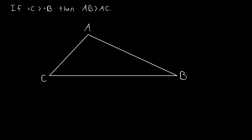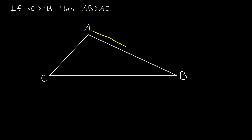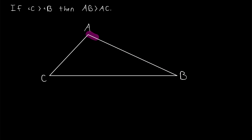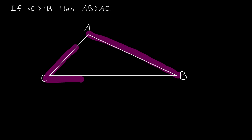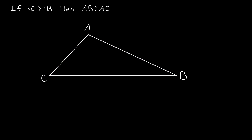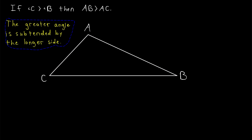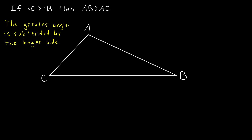So let's get into it — pretty straightforward proof, so I definitely recommend giving it a try yourself before watching the rest of the lesson. We're going to assume that the measure of angle C is greater than the measure of angle B. We want to prove that the side opposite the greater angle, which is AB, is greater than the side AC opposite the shorter angle. We can say that side AB subtends angle C, and similarly side AC subtends angle B. So another way of stating what we're proving is that the greater angle is subtended by the longer side.